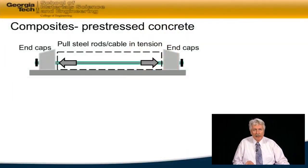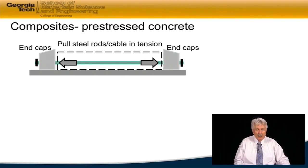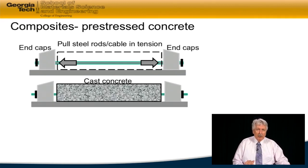We take steel rods or cables, apply tension, and because steel is metallic in nature it can be deformed. By tightening down on the end caps, we put the steel cable or rod into a state of tension. With the rod in tension, we then cast the concrete around it. The metal rod is a ductile material and is very good in tension, which is why we can pull it.